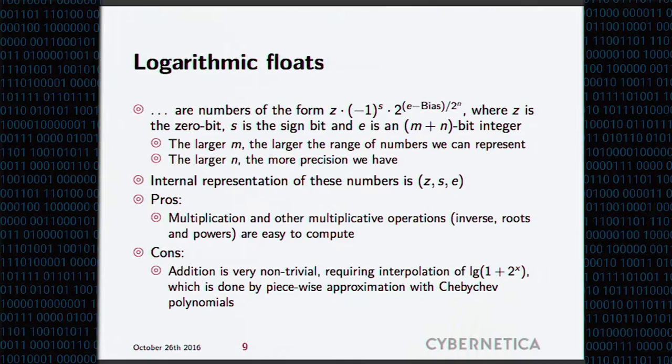What are the pros of this representation? Multiplication and other multiplicative operations like inverses, roots, powers are very easy to compute. Cons, of course, is that addition becomes very non-trivial. If in case of golden-section numbers, addition was very easy and multiplication was hard, here is vice versa. Your multiplication is trivial. You basically just add the exponents and take care of the bias.